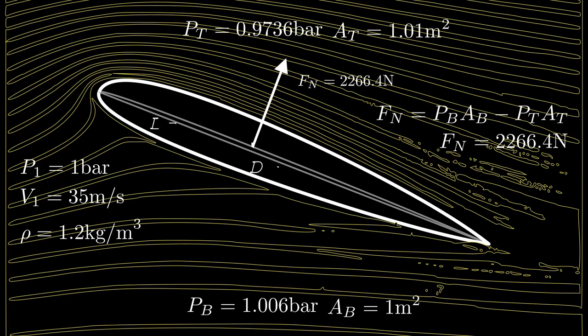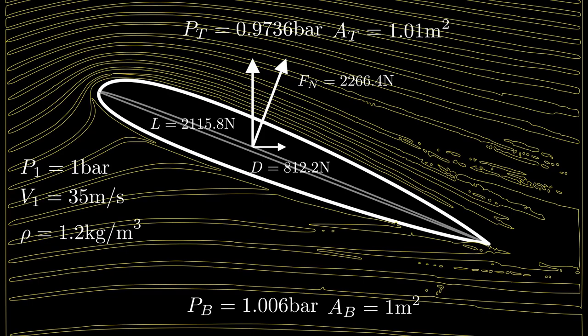We find the components, up being lift at 2,115.8 N, and to the right is drag at 812.2 N. Lift is always perpendicular to the free stream flow, and drag is always parallel to it. Now, if we were to turn this airfoil parallel to the flow and make it symmetrical, we would know the pressures would cancel out, and there would be no lift or drag. Only, that's not the case.